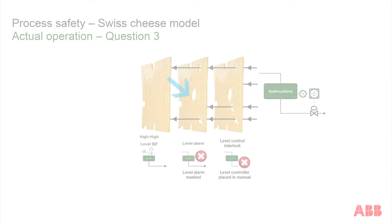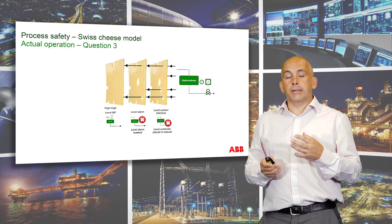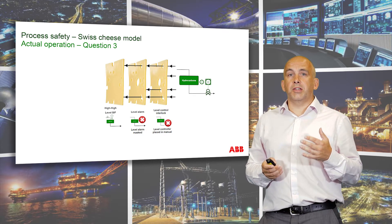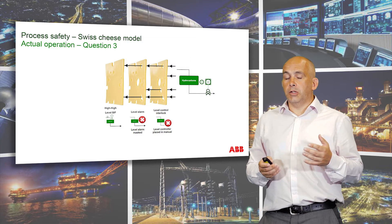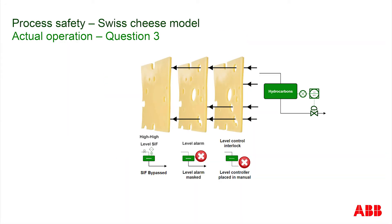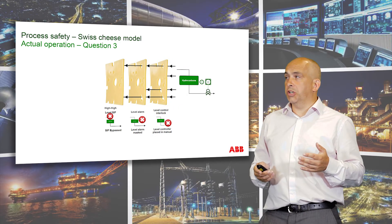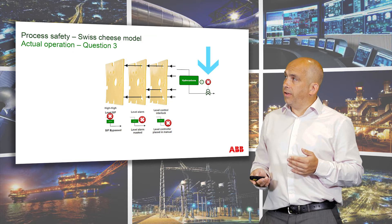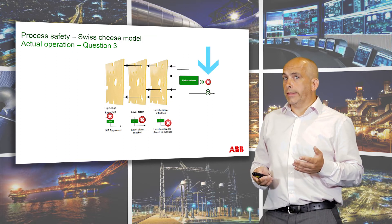Some time later, a maintenance person comes along to do a proof test on that final barrier. To do that task, they have to bypass or override that particular safety instrumented function. As soon as that override is placed, the third barrier becomes ineffective and we introduce another hole in that final slice of Swiss cheese. Now we've got nice hole alignment in our Swiss cheese model, such that when we have a failure of the level control, we get the incident.